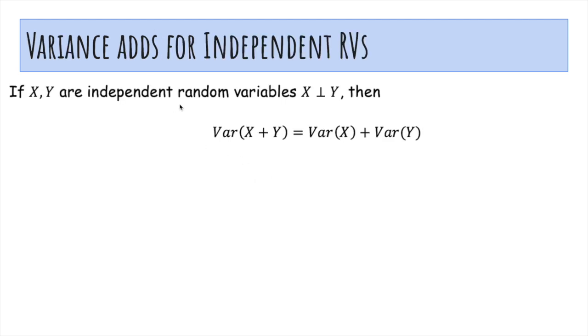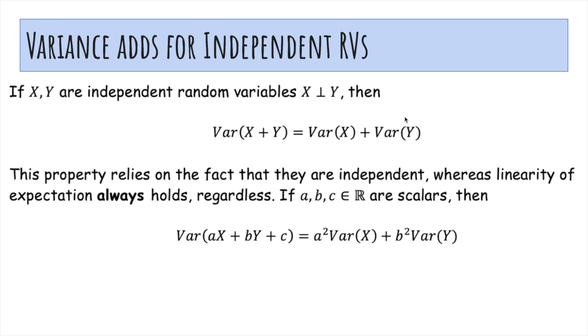So if X and Y are independent random variables, then the variance of X plus Y is the variance of X plus the variance of Y. This property relies on the fact they're independent, whereas linearity of expectation always holds regardless of independence.